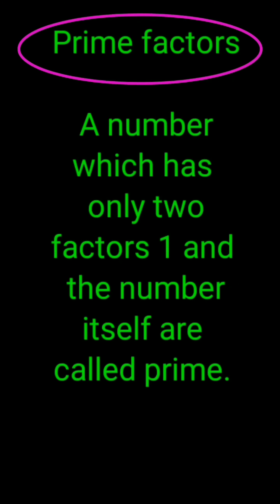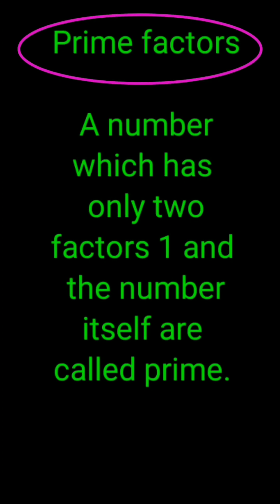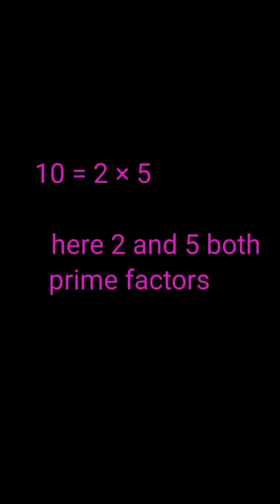Those factors which cannot be further divided are called prime factors. A number is prime if it has only two factors: one and the number itself. In prime factorization, we write the number as a product of prime factors.